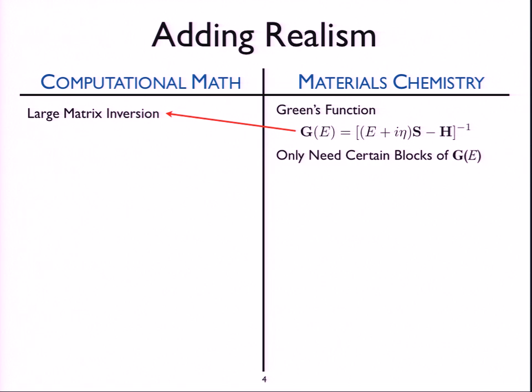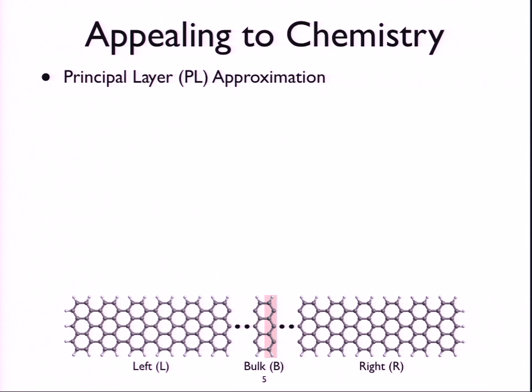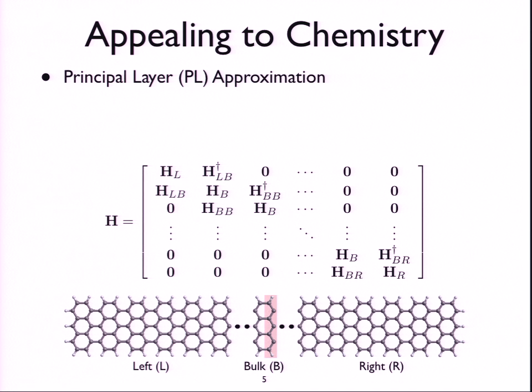We can also, though, appeal to our materials chemistry and realize that for most applications we're interested in, we only need certain blocks of the Green's function matrix or operator. And so let's not waste any time calculating things that we don't ultimately care about. And so further appealing to our chemistry, we can use a very common principle layer approximation, which has been well known in complex band structure literature for 30 years, to basically take our material, and there's the graphene nanoribbon pictured here on the bottom, and break it up into units that are sufficiently big that they only really see the unit to their left or the unit to their right.